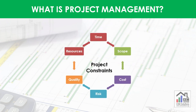Project constraints are interrelated to each other. For example, if you want to reduce the time of a project, then you may have to increase resources, which will in turn increase the cost of the project. And if you cannot increase your budget, then you may have to compromise on scope or quality. This nature of constraints makes project management extremely important for projects.